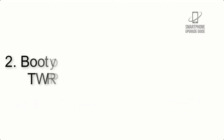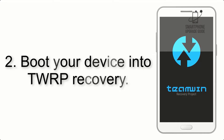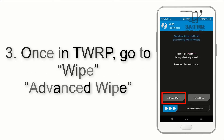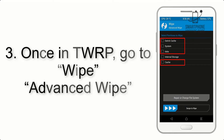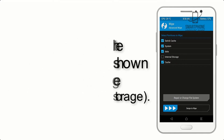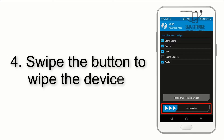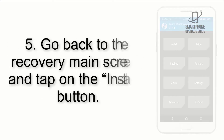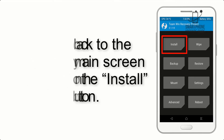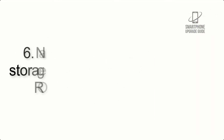Step 3: Boot your device into TWRP recovery. Once in TWRP, click on Wipe, then Advanced Wipe, and select the checkboxes as shown in the image, excluding internal storage. Step 4: Swipe the button to wipe the device. Step 5: Go back to the recovery main screen and tap on the Install button.